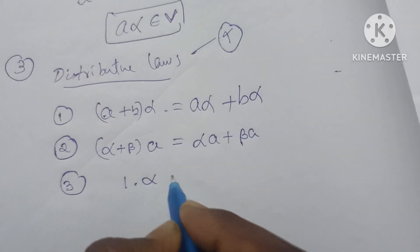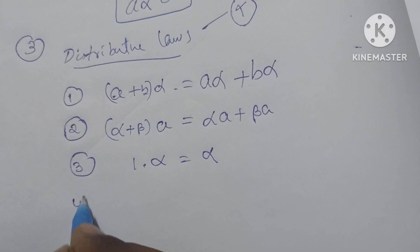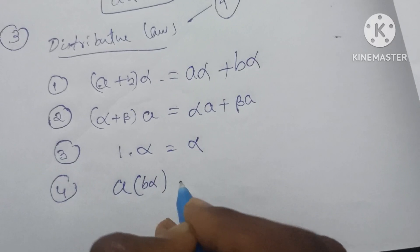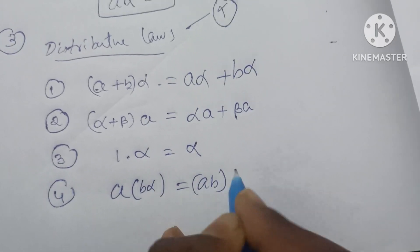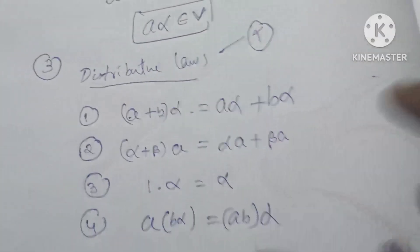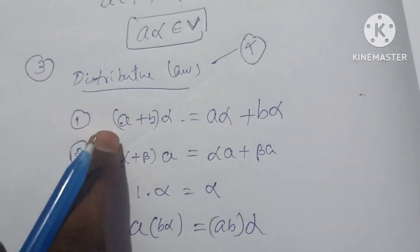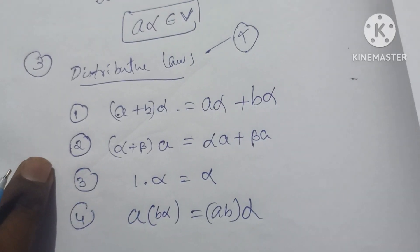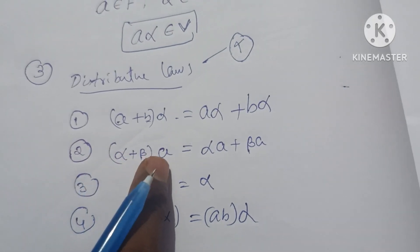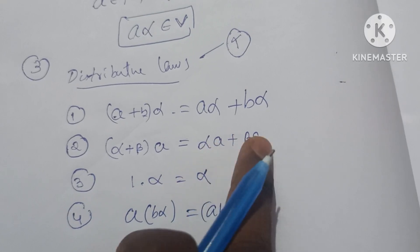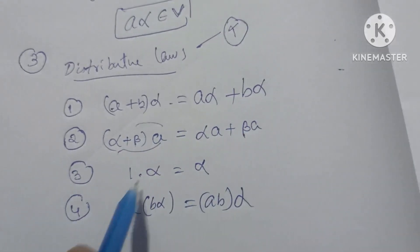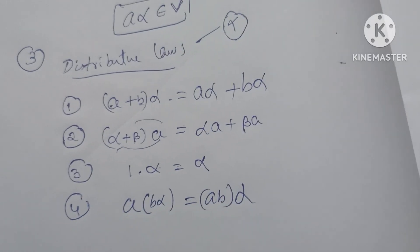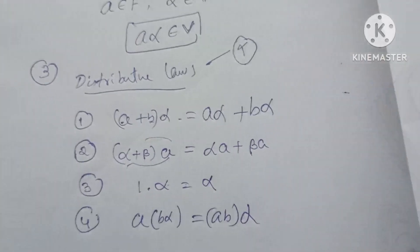The four distributive law conditions are: 1 into alpha equals alpha; a into b alpha equals ab into alpha; a plus b into alpha equals a alpha plus b alpha; and alpha plus beta into a equals alpha a plus beta a. We can see all four distributive law conditions are satisfied, and this gives us the vector space.